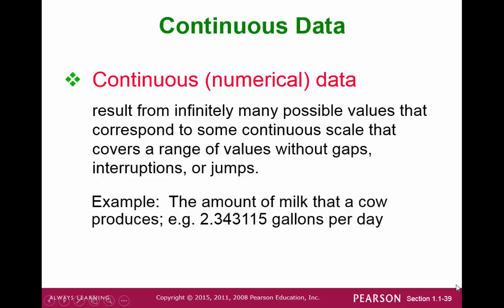In contrast, a continuous dataset would result from infinitely many possible values that correspond to some continuous scale. For example, the amount of milk that a cow produces — we don't necessarily just say one, two, or three gallons. We can say two point three four three one one five gallons.